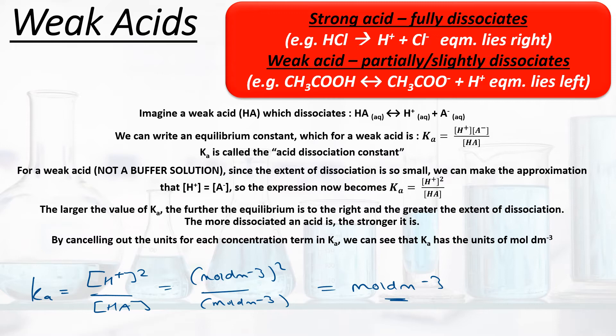If we imagine a weak acid, let's call it HA, which dissociates, we can write the equilibrium expression: HA dissociates into H+ and A⁻. Like we did in the previous video, we can write an equilibrium constant. Remember that we have concentrations of products divided by concentrations of reactants. For a weak acid we define our equilibrium constant, which we call Ka, as the H+ concentration times the A⁻ concentration over the HA concentration. Ka is called the acid dissociation constant — in reality it's no different from Kc, it's just that A stands for acid.